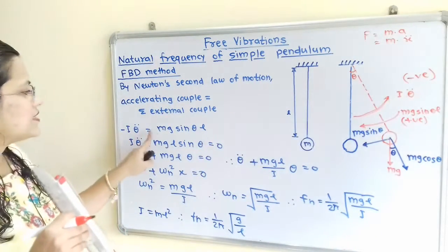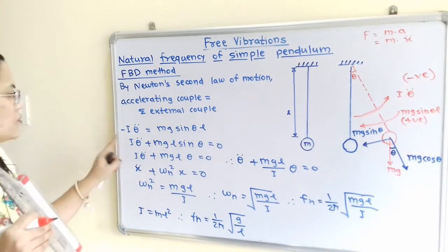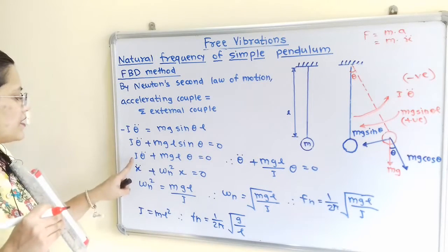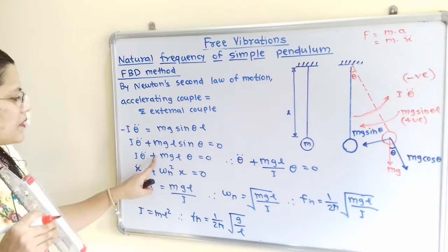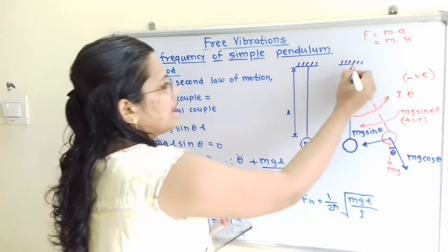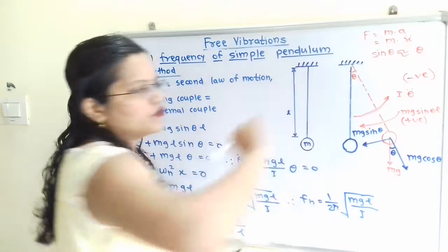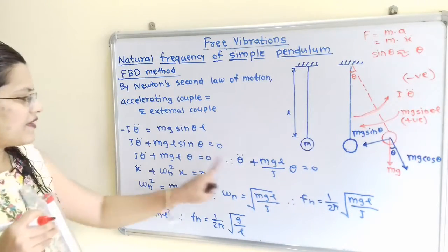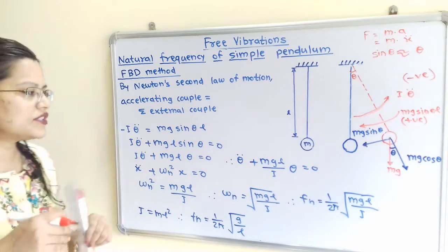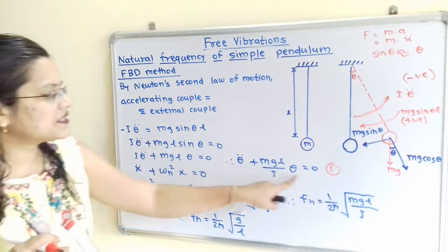We write: minus I theta-double-dot equals MG sin theta times L. Simplifying, I theta-double-dot plus MGL sin theta equals zero. For small angles, sin theta is approximately equal to theta, so I theta-double-dot plus MGL theta equals zero.